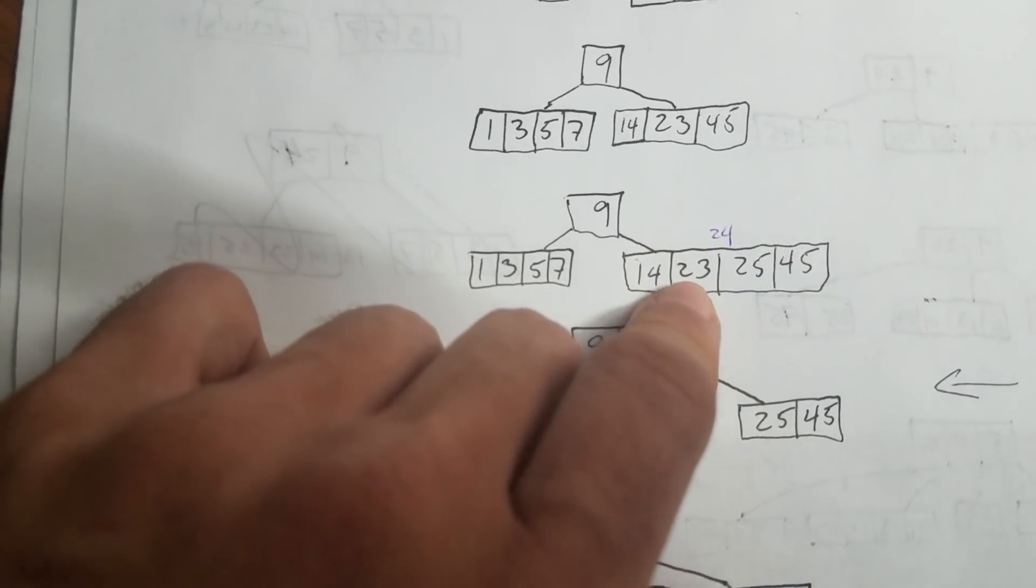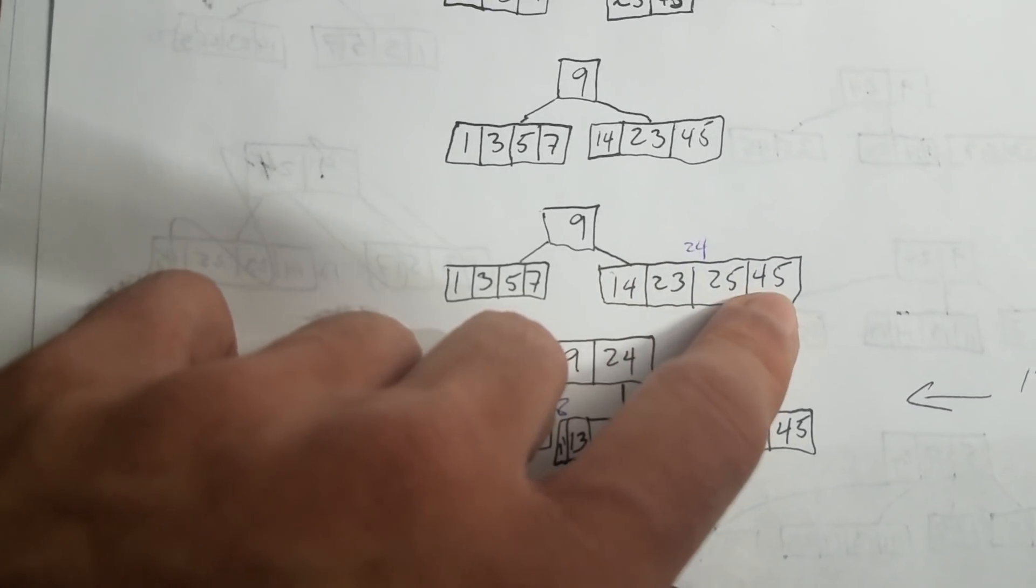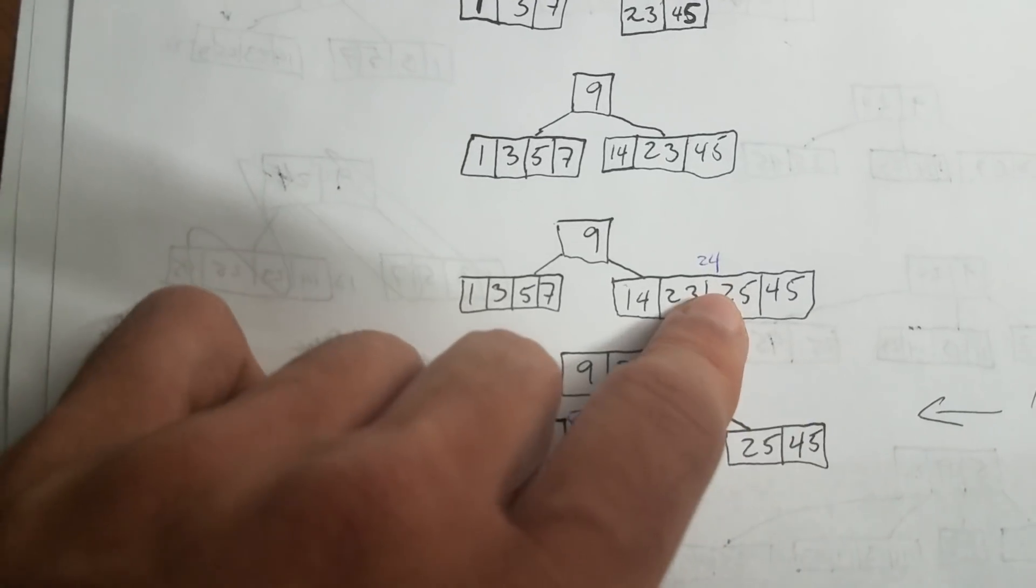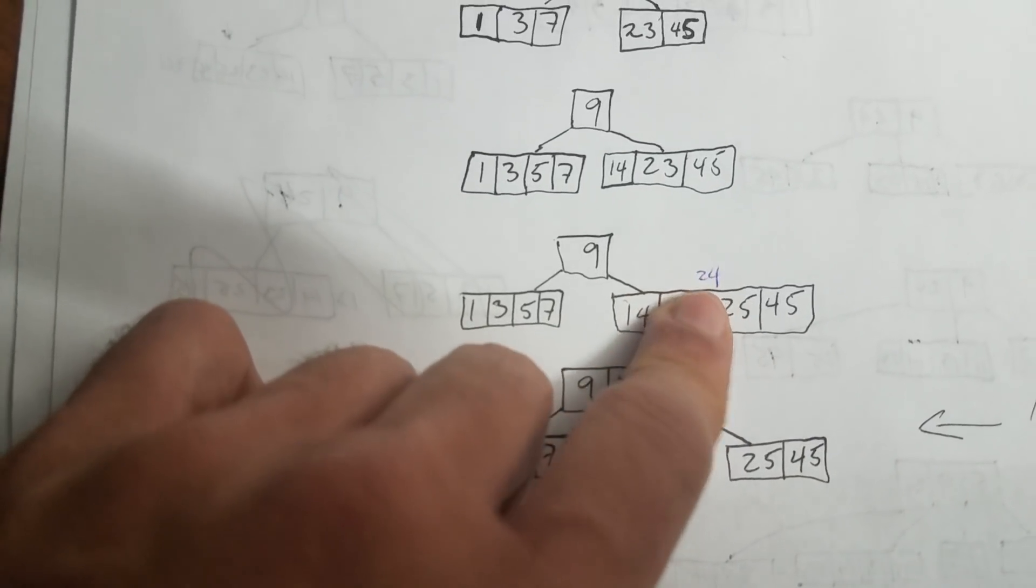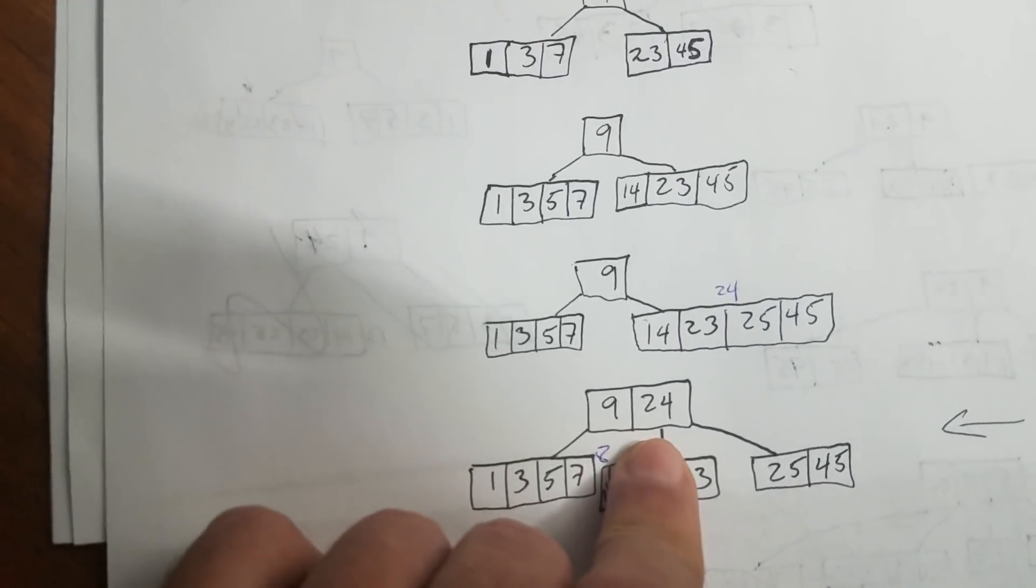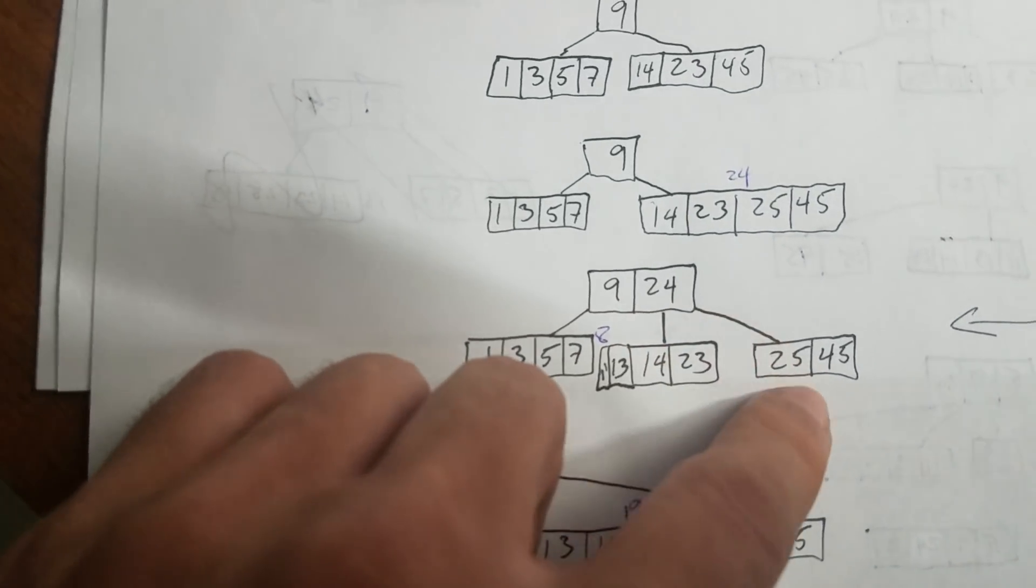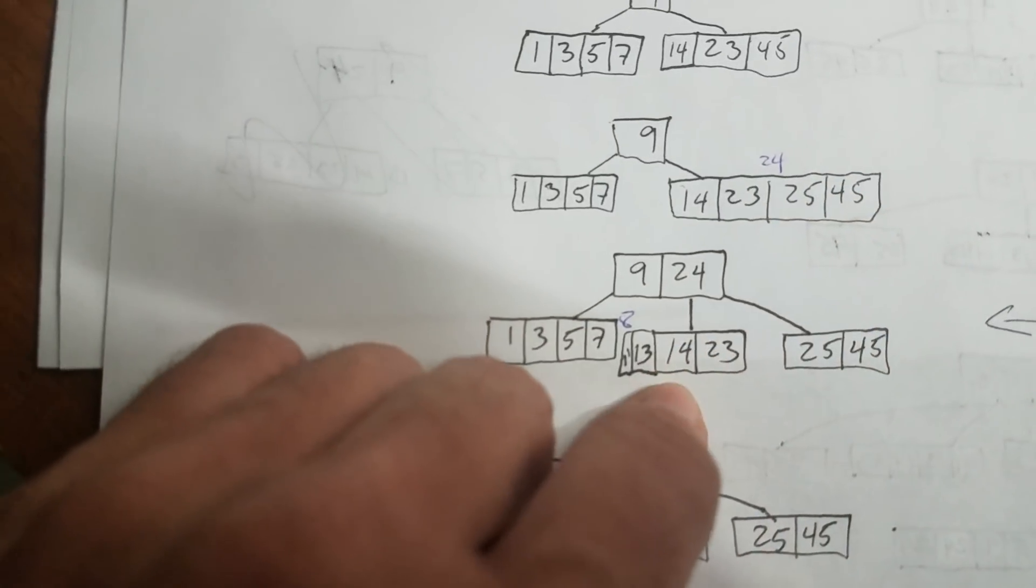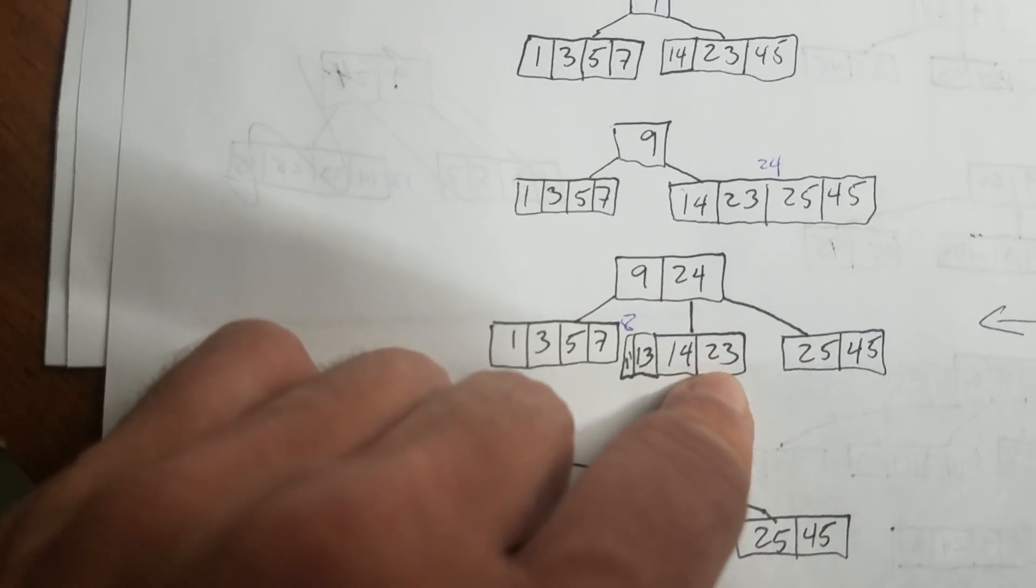So you're going to promote 24 and you're going to divide this node. So 14, 23 goes into one, 25 and 45 goes into another one and 24 goes up. There you go. So 9, 24 and then 25 and 45 and 14 and 23.